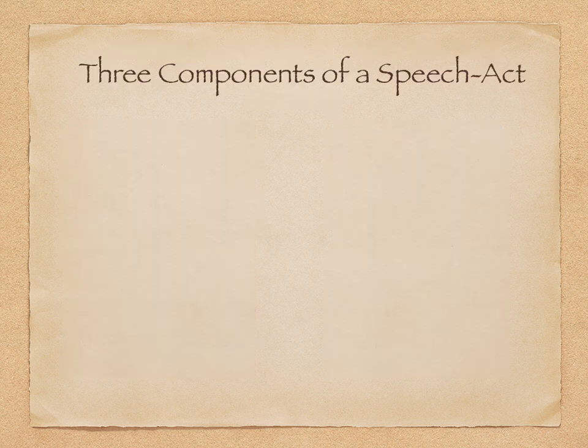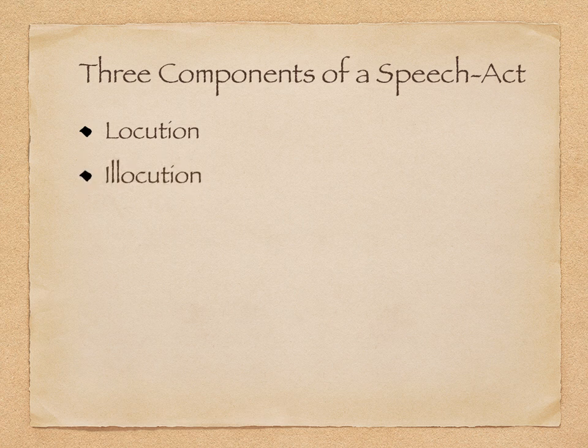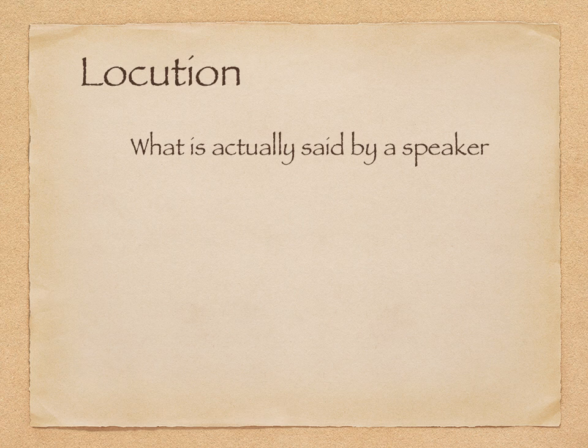Searle maintains that there are three components of a speech act. We have the locution — that's what's said. There is the illocution — what's actually meant by those things. And then there's the perlocution — how a listener responds. The locution is what is actually said by a speaker, and it's important to note that the locution can take any number of forms: statements, questions, and all sorts of grammatical variations. These are the words that are spoken.